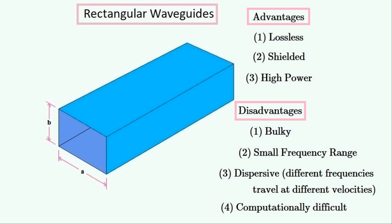Here is a list of all of its advantages and disadvantages so as to help you decide whether to use them or not. The advantages are that they are lossless, the signal is shielded from noise from outside the waveguide, and it can handle high power radiation. The disadvantages are that they are bulky and heavy, can only carry a small range of frequencies, they are dispersive so they'll distort a signal if it has more than one frequency in it, and it is mathematically hard to work with.